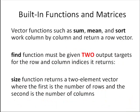There are a few built-in functions that are useful for matrices. The vector functions we talked about such as sum, mean, and sort, these functions work column by column when the argument is a matrix and the result is a row vector. For example, if you took the sum of a three-by-three matrix, the result would be a row vector that's three elements long and each of those elements would be the sum of each column. The find function, when used with matrices, you need to give that two output targets, one for the row and one for the column for the indices it returns.